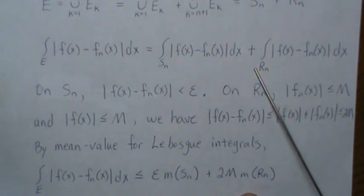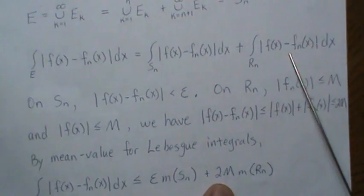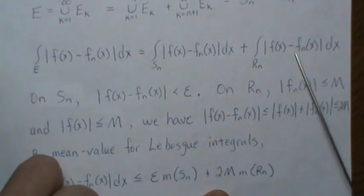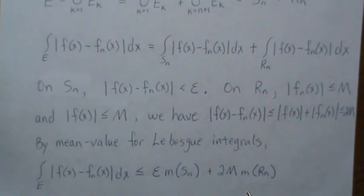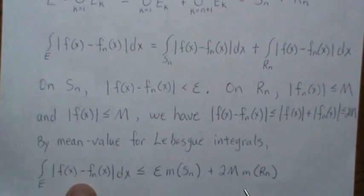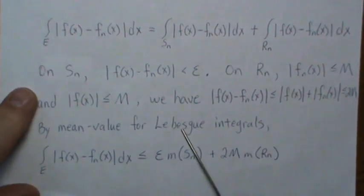And so this is part of this mean value for Lebesgue integrals. So we take the measure of R_N, and then we have it times the maximum of what this can be. And so this integral is less than or equal to this by this theorem.